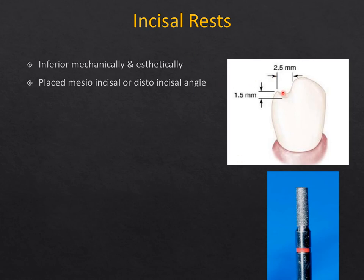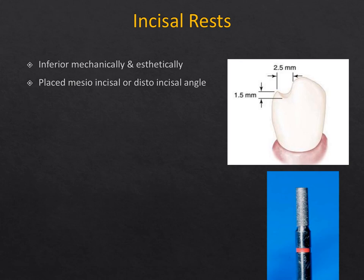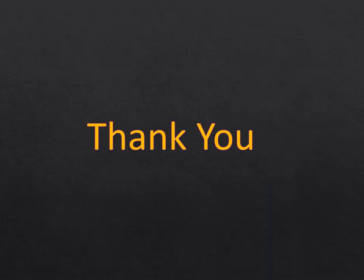Incisal rests are placed on incisors or anterior teeth and are inferior both mechanically and aesthetically compared to occlusal and cingulum rests. They are placed at the meso-incisal or disto-incisal line angle — not at the center of the incisal edge. They should have a width of 2.5 mm and a height of 1.5 mm. They are unaesthetic, not preferable, and may cause sensitivity. This concludes the lecture.